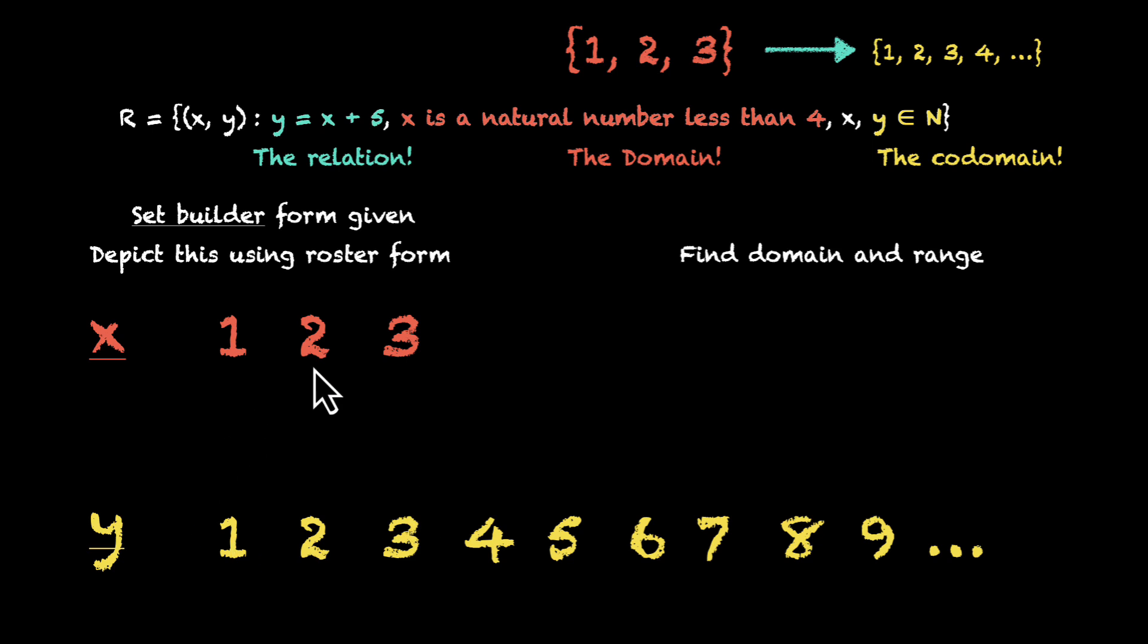What is the relation? The relation is between these elements, one, two, and three, to some of these elements. If we try plugging in values, if you plug in one, what do we get? x equals one will give us y equals one plus five, that's six. So this means one is related to six. One comma six, this ordered pair is part of the relation. So that's our first ordered pair.